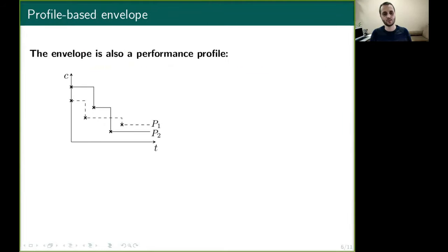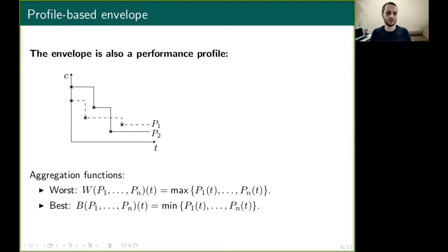Here we have an example with two profiles. We propose two basic aggregation functions. The worst function computes the pointwise maximum solution cost for each value of time, and the best function computes the pointwise minimum solution cost. Here we have the results.